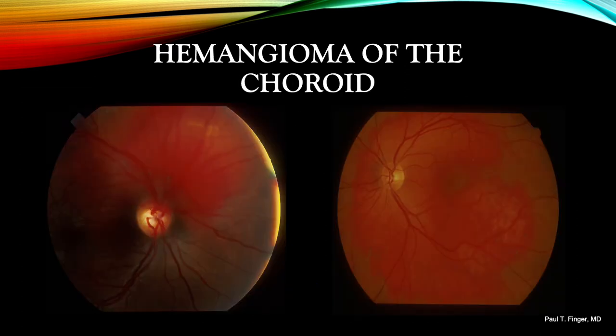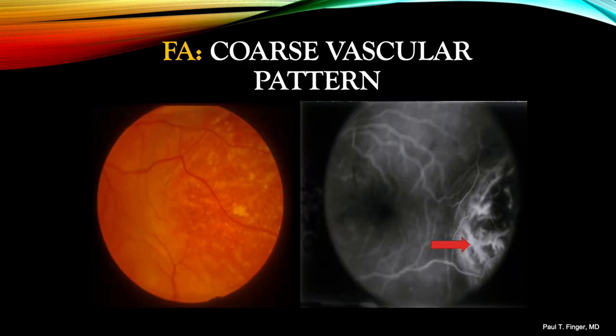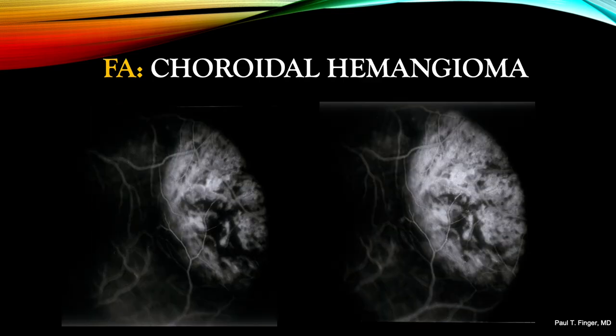Here are two examples of circumscribed choroidal hemangioma. Each is red in color. Their edges are well demarcated. This choroidal hemangioma is also red in color. However, its vascular pattern is pathognomonic. The coarse vascular pattern is best seen in the early phases of the fluorescein angiogram. As the fluorescein angiogram progresses from left to right, the tumor's blood vessels quickly leak, leading to a coalescing of the fluorescein hyperfluorescence.